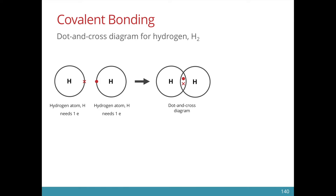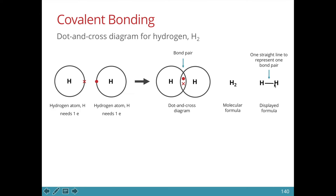When electrons are shared, we allow the two atoms to overlap, and we put the shared electrons in the overlapping region. The shared electrons are referred to as the bond pair. Note that each atom now has effectively two electrons in the outermost shell. We can represent the bonding using a displayed formula, where a straight dash represents a bond pair, and each bond pair contains two electrons.